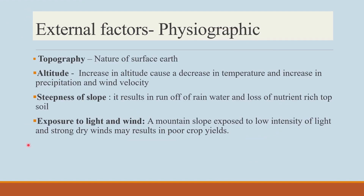Coming to physiographic external factors — topography refers to the nature of the earth's surface, and topographic factors affect crop growth indirectly. Altitude is one important factor: increase in altitude causes decrease in temperature, which leads to increase in precipitation and wind velocity — and if precipitation increases, there can be an outbreak of pests and diseases. The steepness of the slope causes runoff of rainwater and loss of nutrient-rich topsoil. Exposure to low-intensity light and strong dry winds may result in poor crop yields.